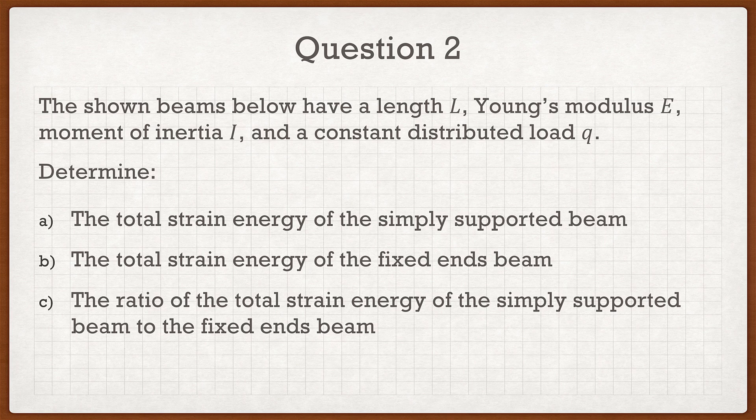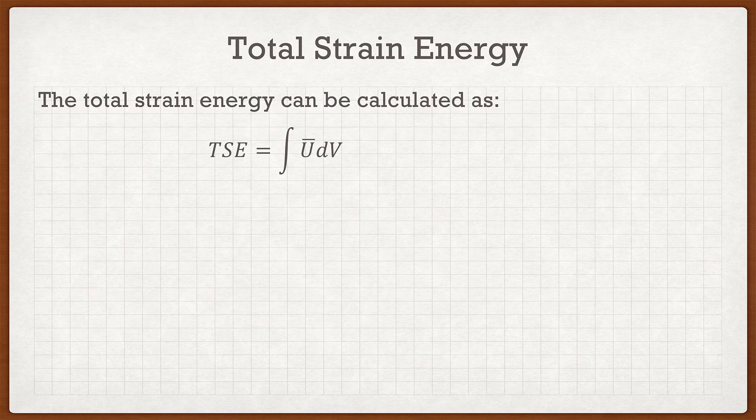Parts A and B are essentially two questions, because part C is just taking the answer from part A and dividing it by the answer from part B. Both parts A and B are identical in the sense that they both want the total strain energy of a beam — the process is going to be the exact same, but the only difference will be boundary conditions.